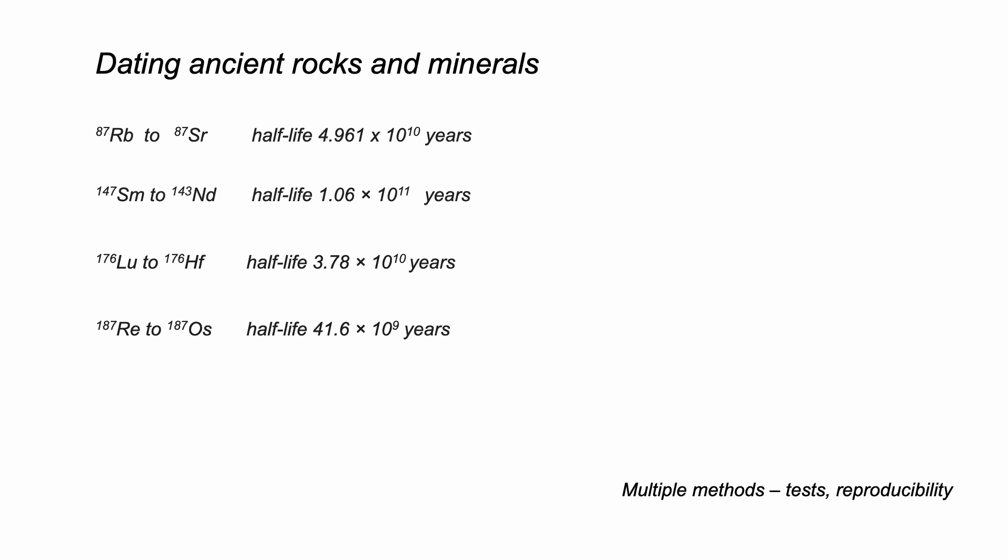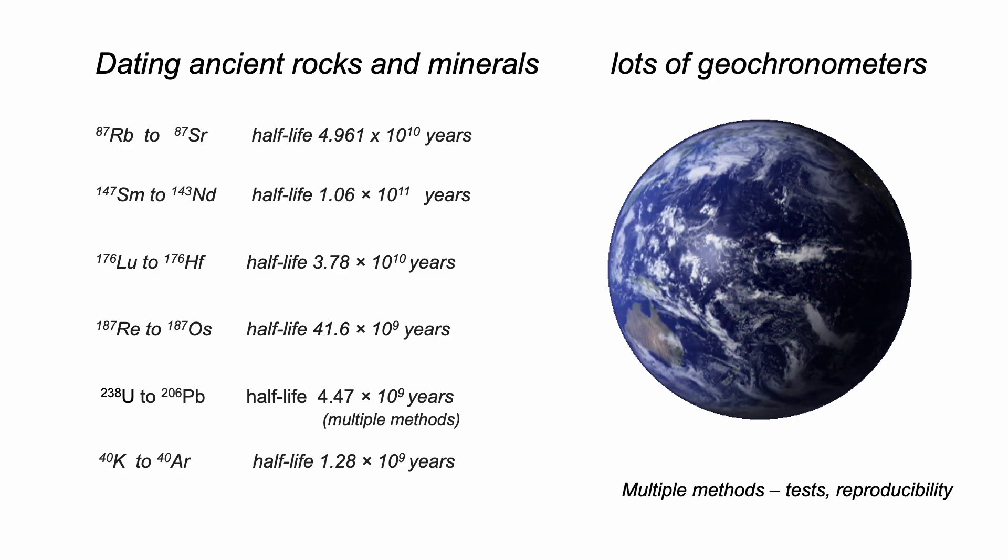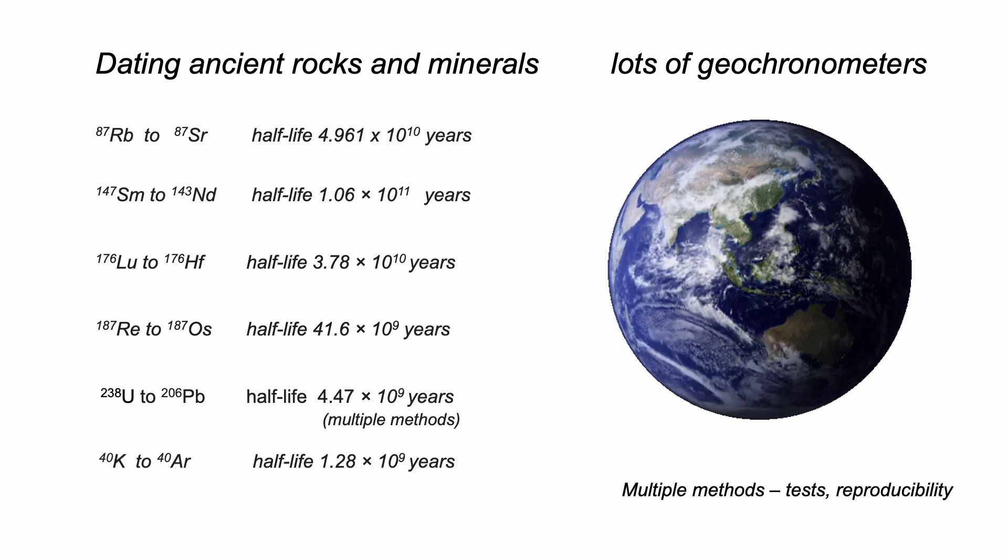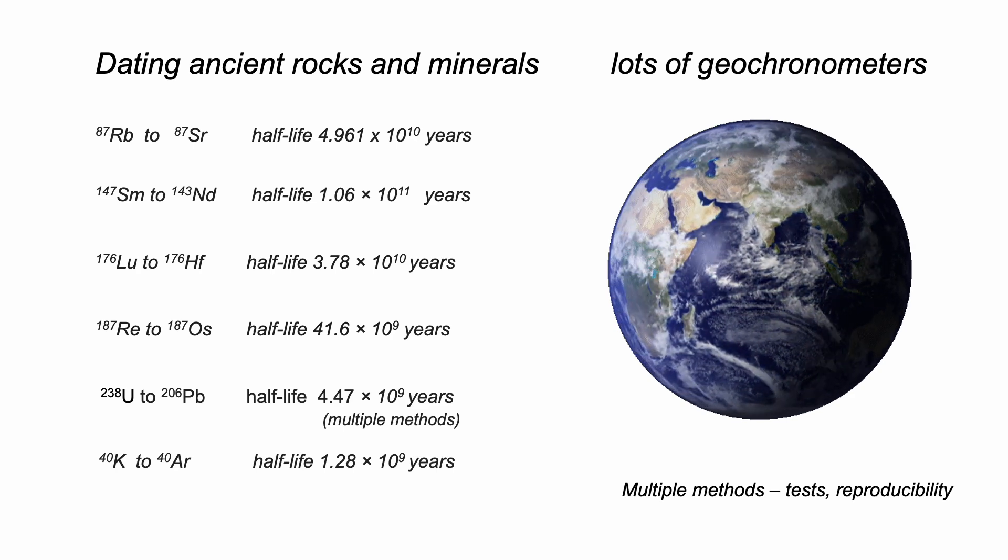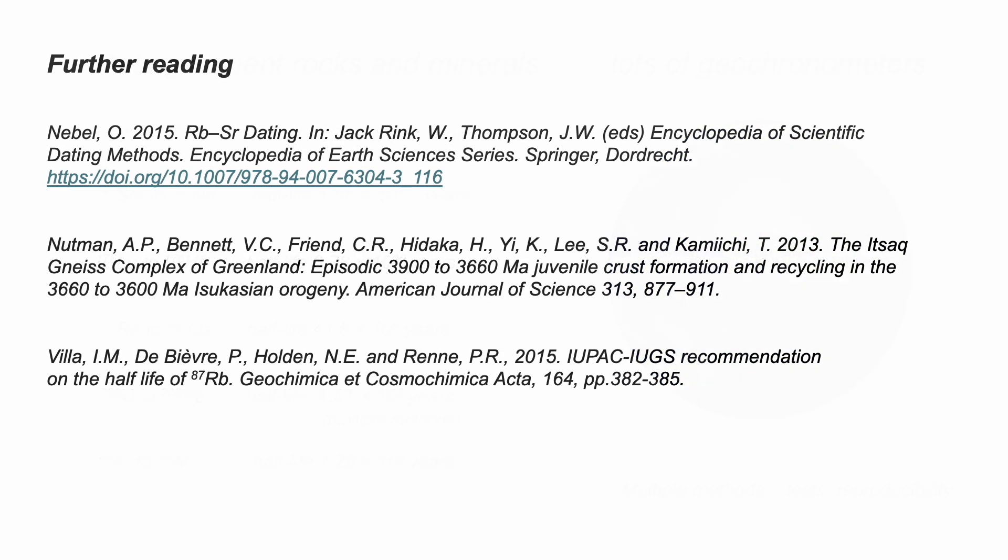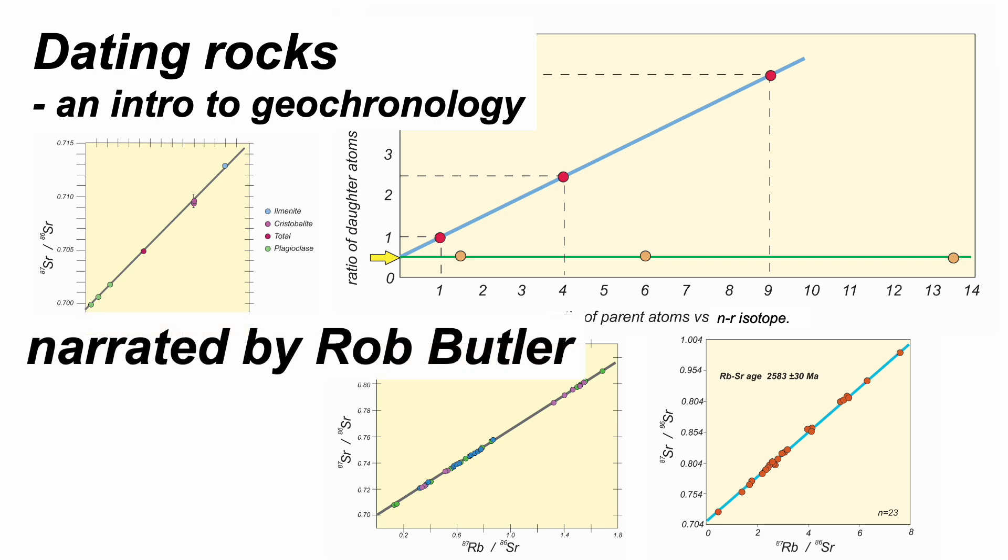And there are other methods too, including the uranium lead system I've just mentioned looking at zircons from Greenland. Modern Earth science has lots of geochronometers which are giving consistent results about the ages of Earth materials. If you want to take this further, try these sources. There's lots of material out there to consult. This film has just been a taster of how we can date rocks and get a timeline on the evolution of our planet. Thank you for watching.